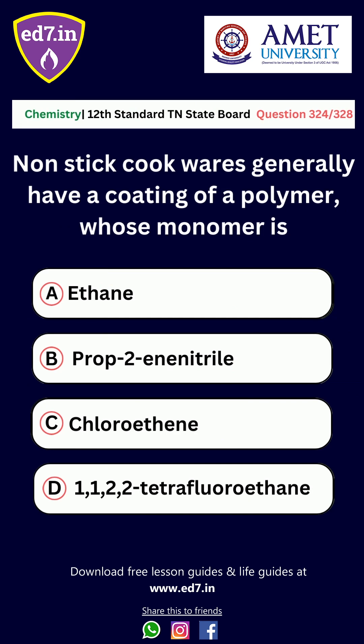Question number 323: Non-stick cookware generally have a coating of a polymer whose monomer is — Option A: Ethane, Option B: Propene or nitrile, Option C: Chloroethane, Option D: 1,1,2,2-tetrafluoroethane. The correct option is Option D, 1,1,2,2-tetrafluoroethane.